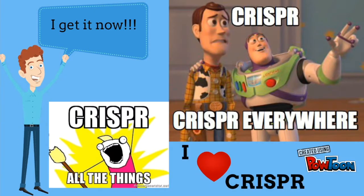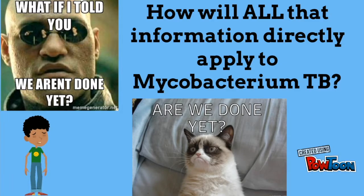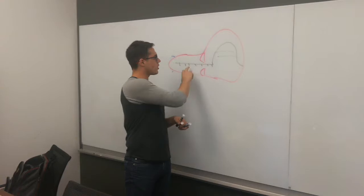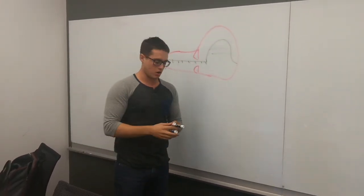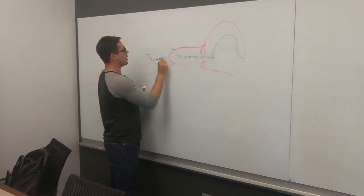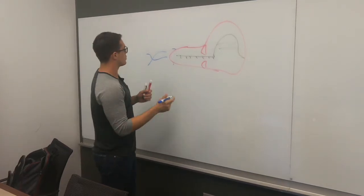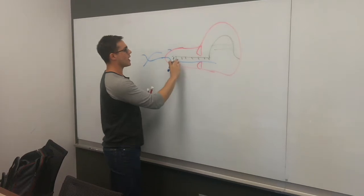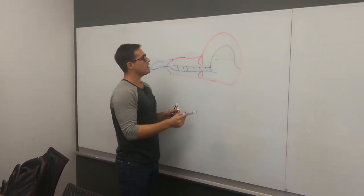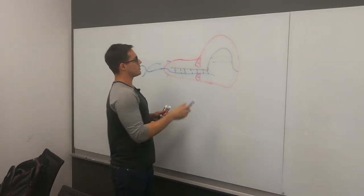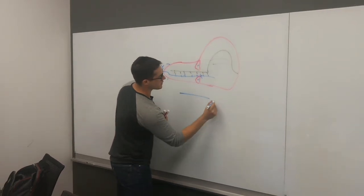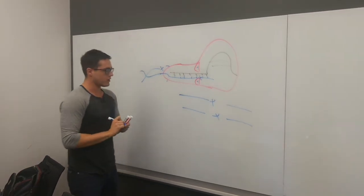Now, how will this apply directly to Mycobacterium tuberculosis? This is our Cas9 RNA-protein complex. The RNA here is a complement to the DNA in our RPOB gene in Mycobacterium tuberculosis. Cas9 has helicase activity, which will unwind the DNA at the gene we're looking for and run through it to match the sequence. Once it finds the complementary sequence to the RNA inside the gene and binds, the nuclease domains will nick the gene on both strands, making essentially a double-stranded break in the DNA.